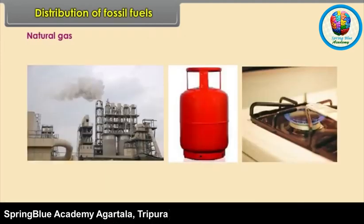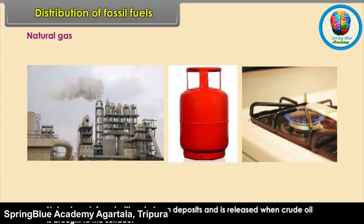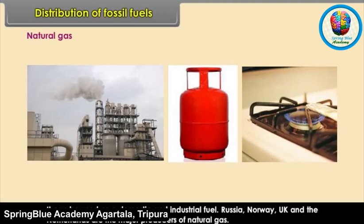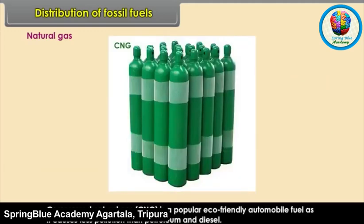Natural Gas: Natural gas is found with petroleum deposits and is released when crude oil is brought to the surface. It can be used as a domestic and industrial fuel. Russia, Norway, UK and the Netherlands are the major producers of natural gas. Compressed Natural Gas (CNG) is a popular eco-friendly automobile fuel as it causes less pollution than petroleum and diesel.